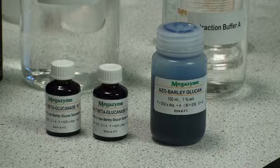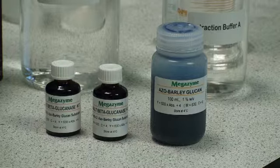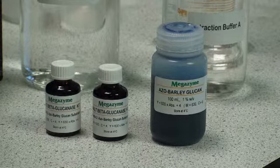Azo barley glucan solution is provided in a form ready to use immediately. This should be warmed to room temperature before dispensing and should be dispensed with a positive displacement dispenser because the solution is quite viscous.